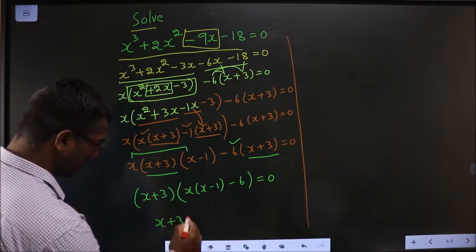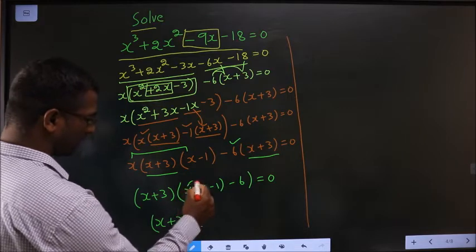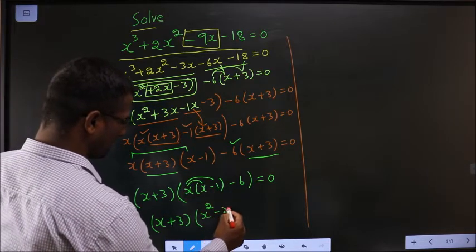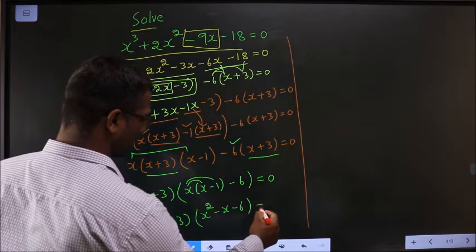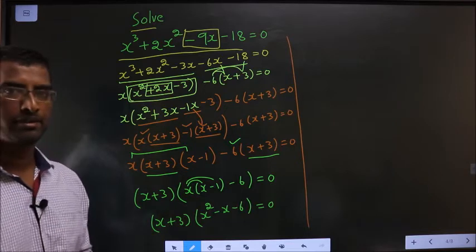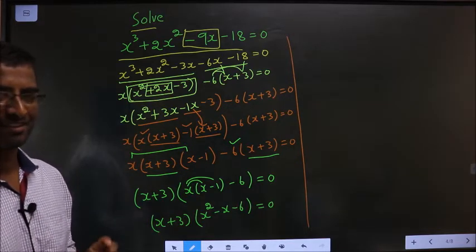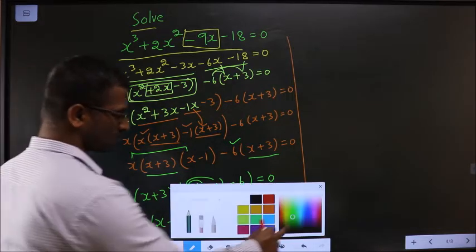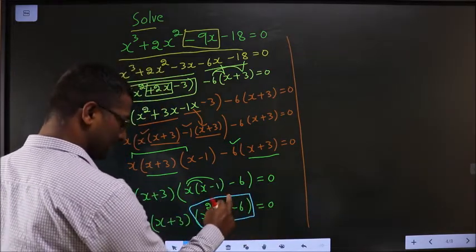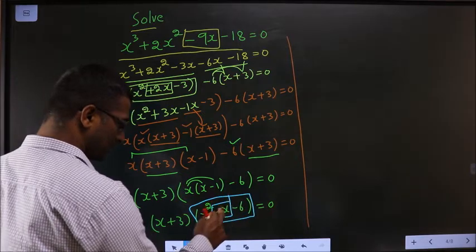Next, x plus 3, now multiply with x. What do we get? x square minus x minus 6 equal to 0. Again, how do we simplify further more? Again you came across quadratic, so again factorize. Again I will change the x term only.